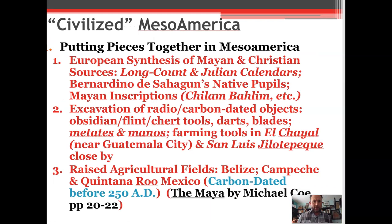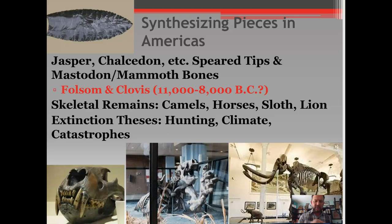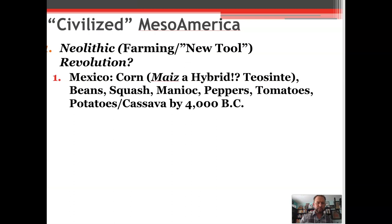We have evidence from the Folsom and Clovis sites — named after the cities where they were found — of human hunters of megafauna. Among the animals were a giant sloth, mastodon, woolly mammoth, lion, tiger, camel, and our own indigenous horse, and the saber-toothed tiger — all of which became extinct by the end of the archaic period.